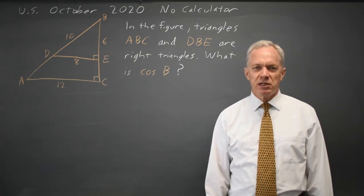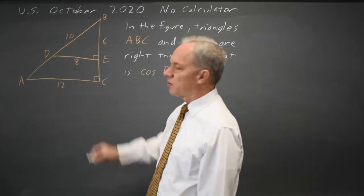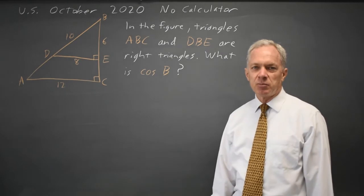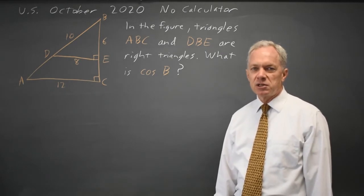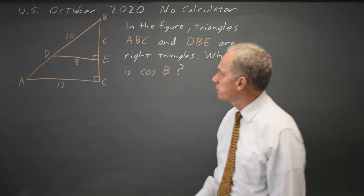This is from the October 2020 U.S. exam non-calculator. College Board gives us a figure and asks for the cosine of angle B, and there's a lot you can do with this figure, but we can find the cosine very rapidly.